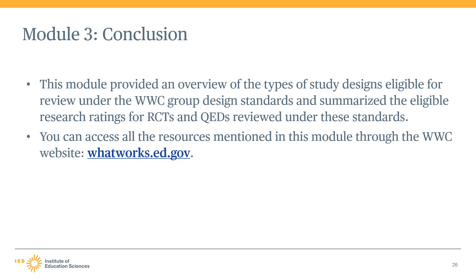This concludes the third module in the WWC group design standards training. Let's review what we discussed in this module. We provided an overview of the types of study designs that are eligible for review under the WWC group design standards — that is, randomized controlled trials and quasi-experimental designs. We also summarized the WWC research ratings that these different types of group designs are eligible to receive under the group design standards. Remember that you can access all of the resources mentioned in this module on the WWC website, whatworks.ed.gov.